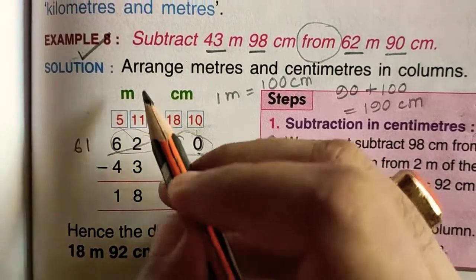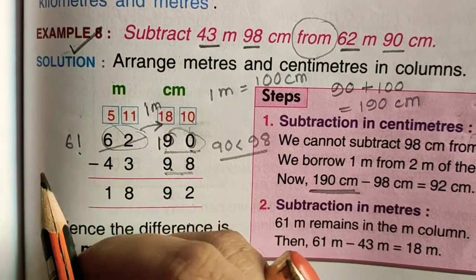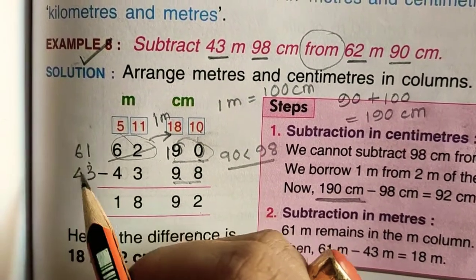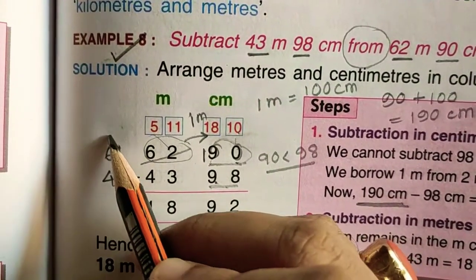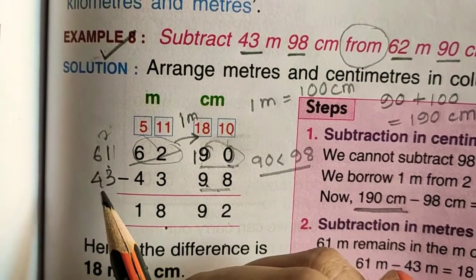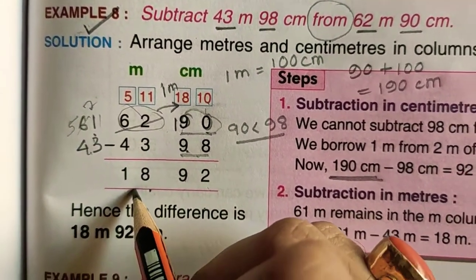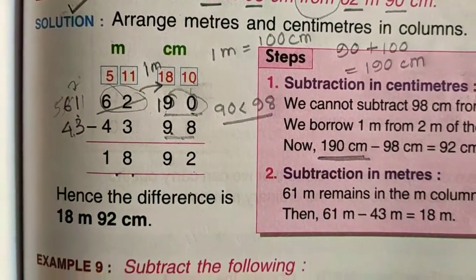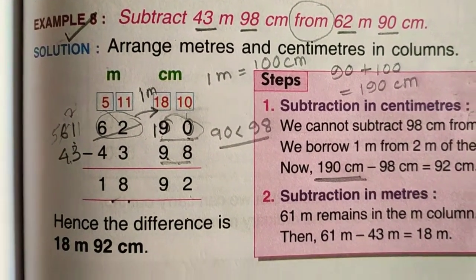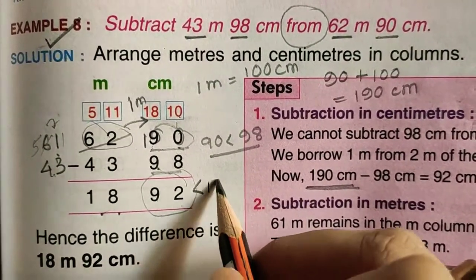190 cm is greater than 98 cm, so now we will subtract normally. 190 minus 98, that will be 92 cm. Now here we have borrowed 1 meter, so 62 will not remain, it reduces to 61, and below we have 43. We do normal subtraction here. So the answer is 18 meter 92 centimeter. This is the normal subtraction with borrowing. Here we did not need any centimeter conversion because the centimeter value is less than 100.